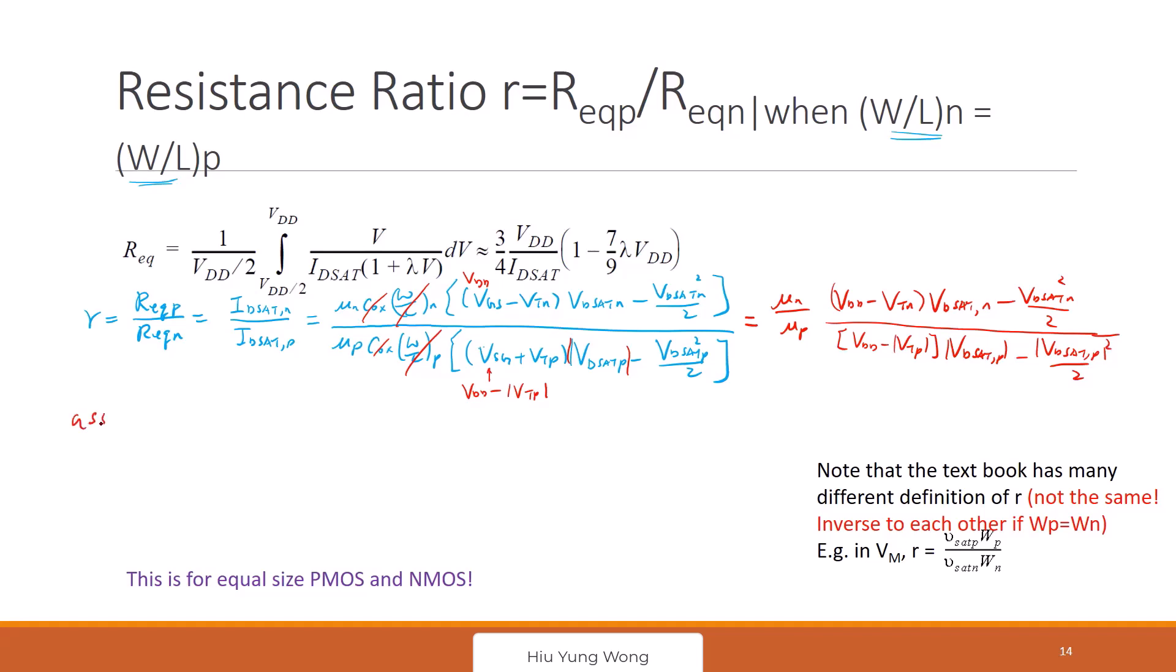Now we are going to make the same assumption: assume VDD much larger than VTP or just VT both, and also VDD is much larger than VDSAT. Okay, because of this, R equals to—because VDD larger than VTN, this one becomes VDD, this becomes VDD, and then this term can be ignored also. Because VDD larger than VDSAT, you get μN VDD VDSAT N divided by μP VDD VDSAT P.